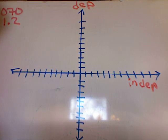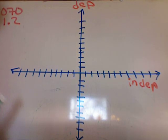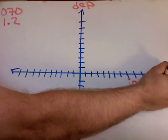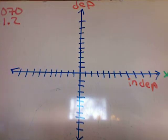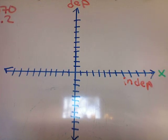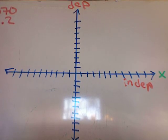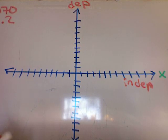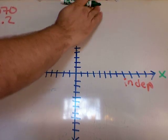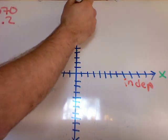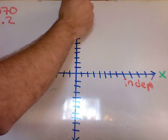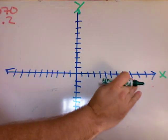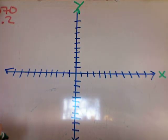Now our independent variable, typically we call it x. Not always though - sometimes it's a t, sometimes it's a q, it could be anything. But typically it's an x. Our dependent variable is typically called y. It doesn't have to be y, it could be anything. This is just the standard.